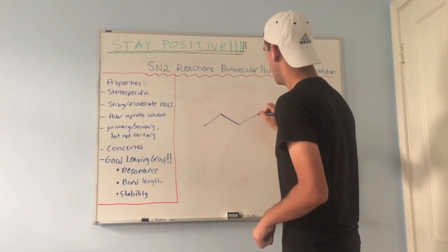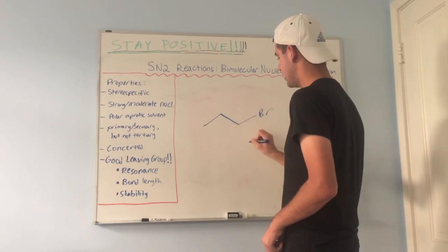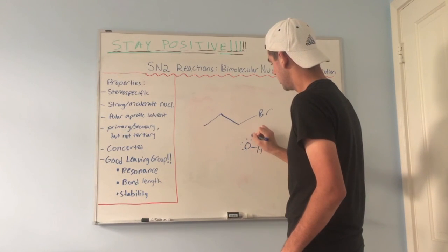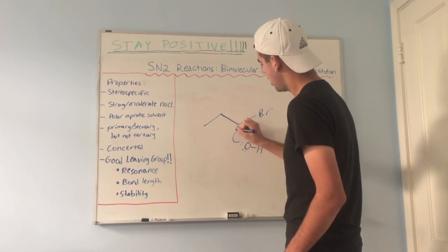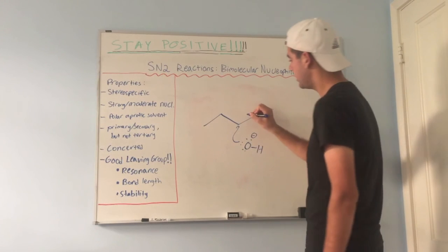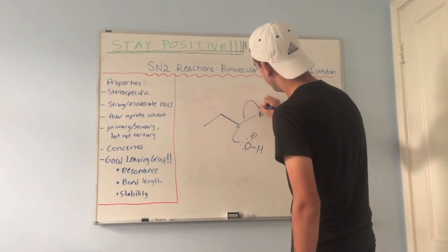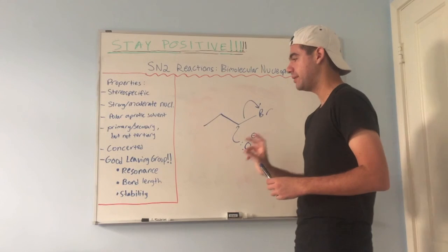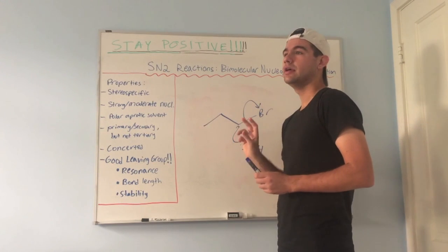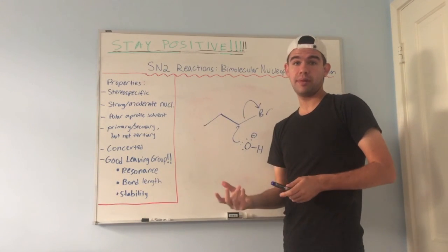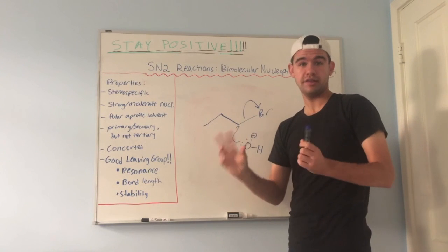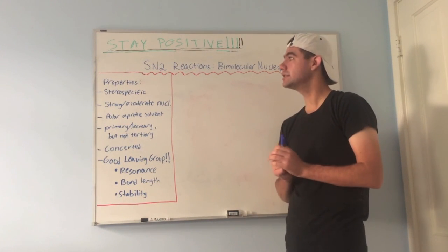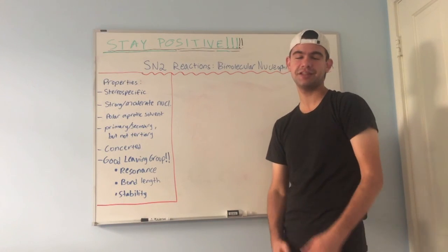So in our example, the OH attacked the electrophilic carbon and simultaneously the bromine left — it's one step, they happen together. In other mechanisms, we'll learn cases where these steps are actually separate. Anyway, I hope that was helpful, and next will be SN1 reactions. Thanks for watching.